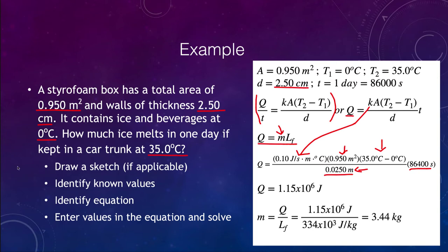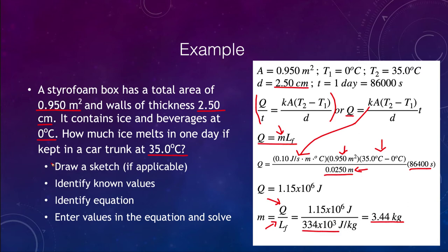The mass of ice that melts equals the heat calculated divided by the latent heat of fusion. That is 1.15 × 10⁶ joules divided by 334 × 10³ joules per kilogram, which gives us 3.44 kilograms of ice that would melt. So nearly three and a half kilograms of ice would melt keeping the beverages at zero degrees Celsius. Once all the ice melts, the temperature of the water and drinks would begin to rise.